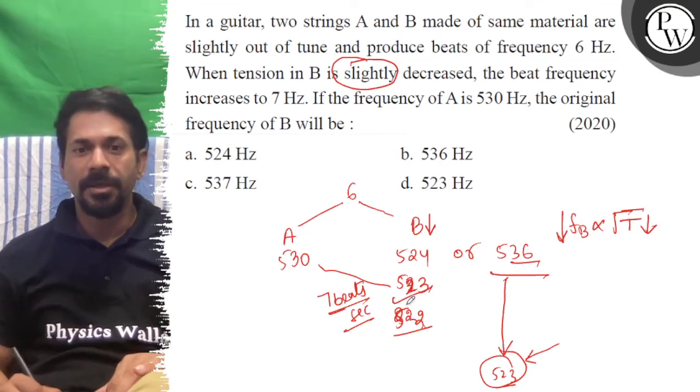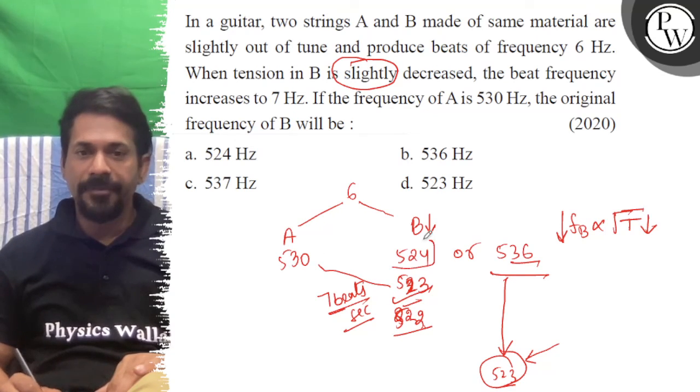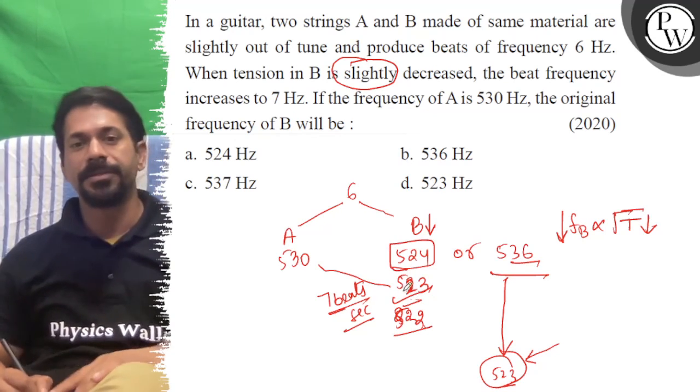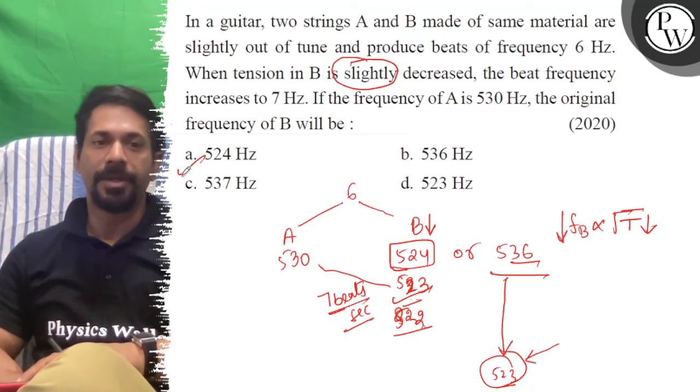So the right answer of the question is 524 will give the immediate result after decreasing. So the right answer is 524. Option A is correct. All the best.